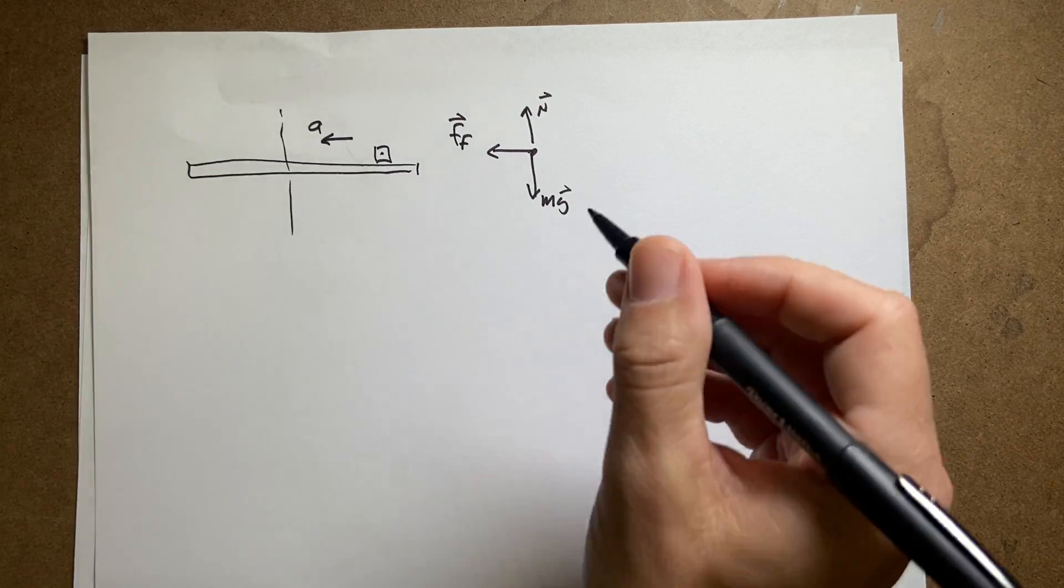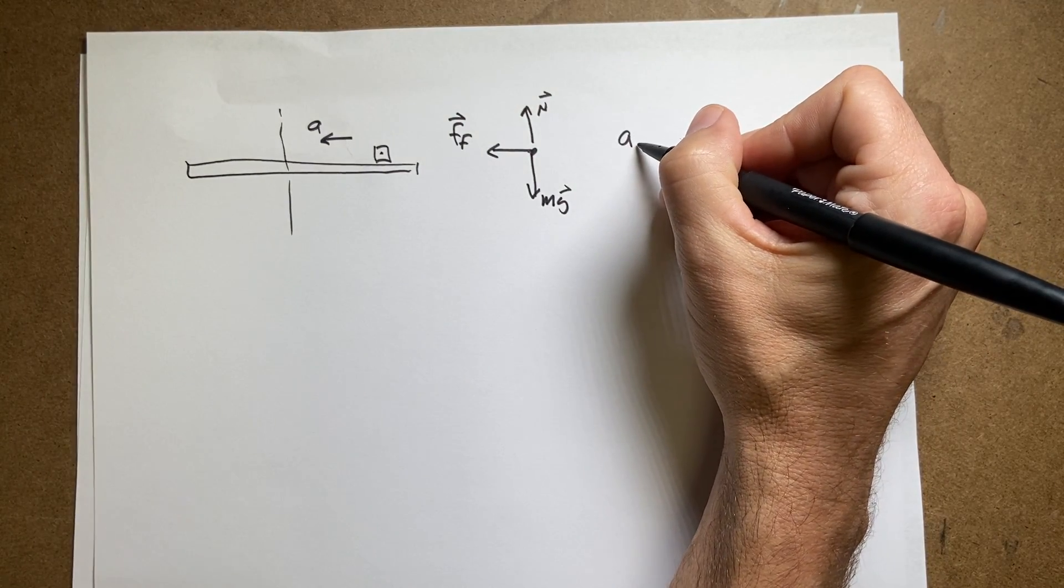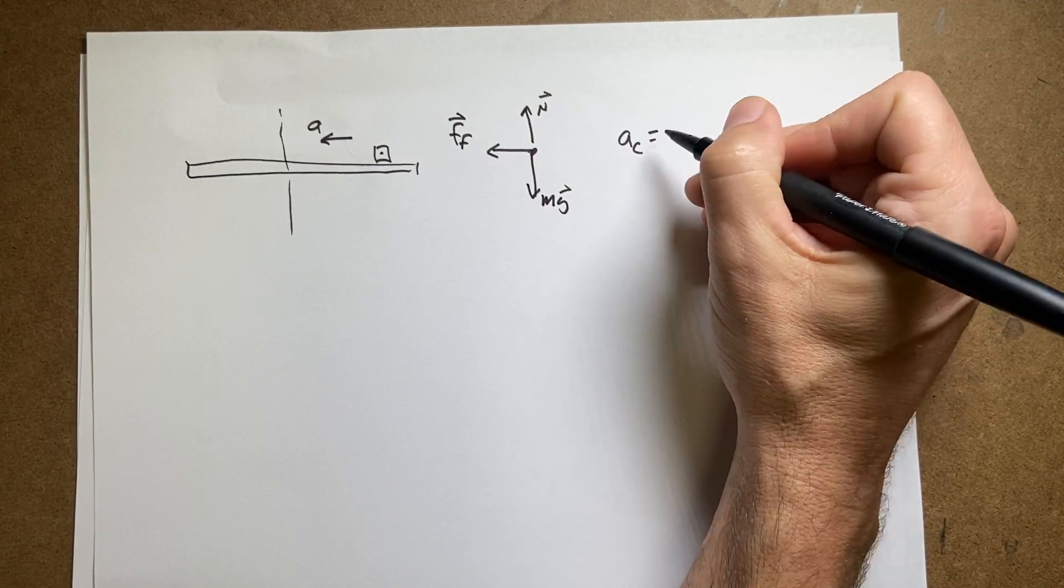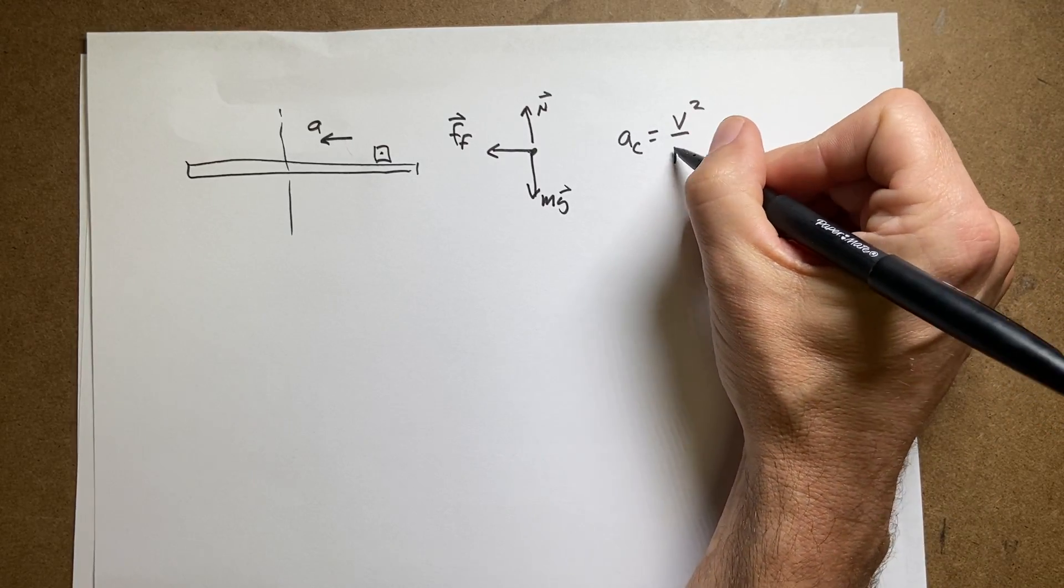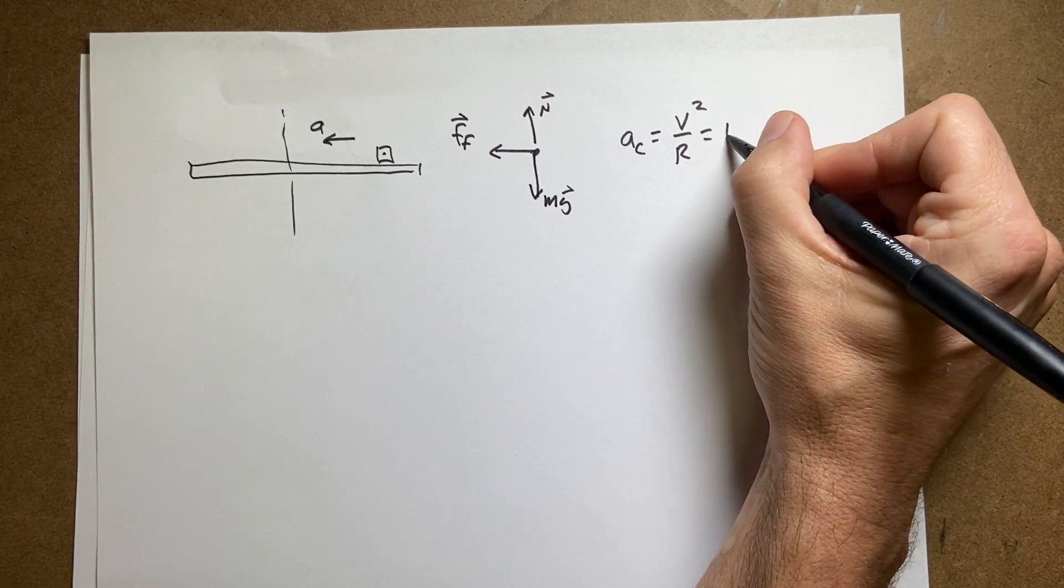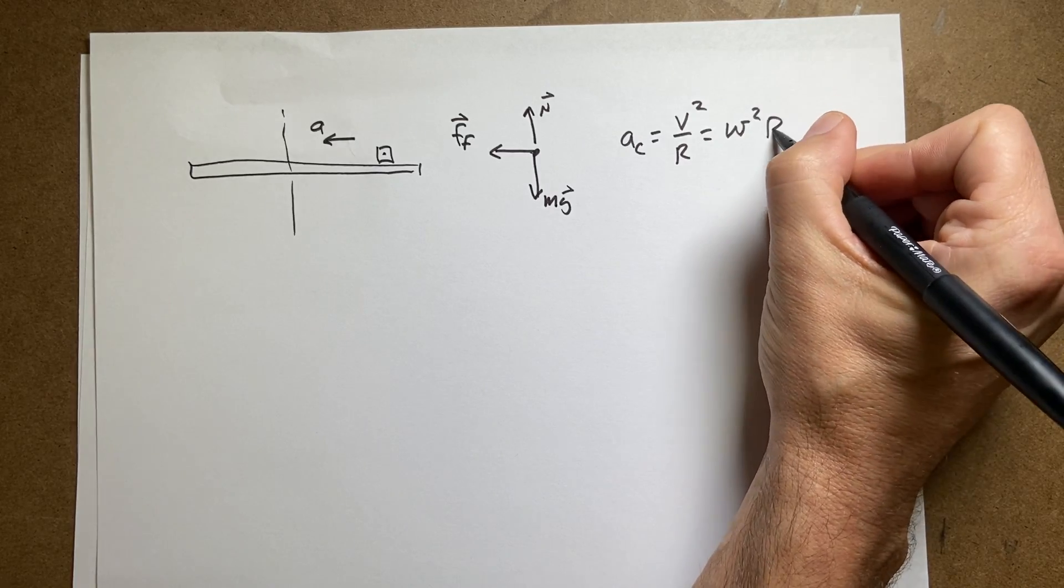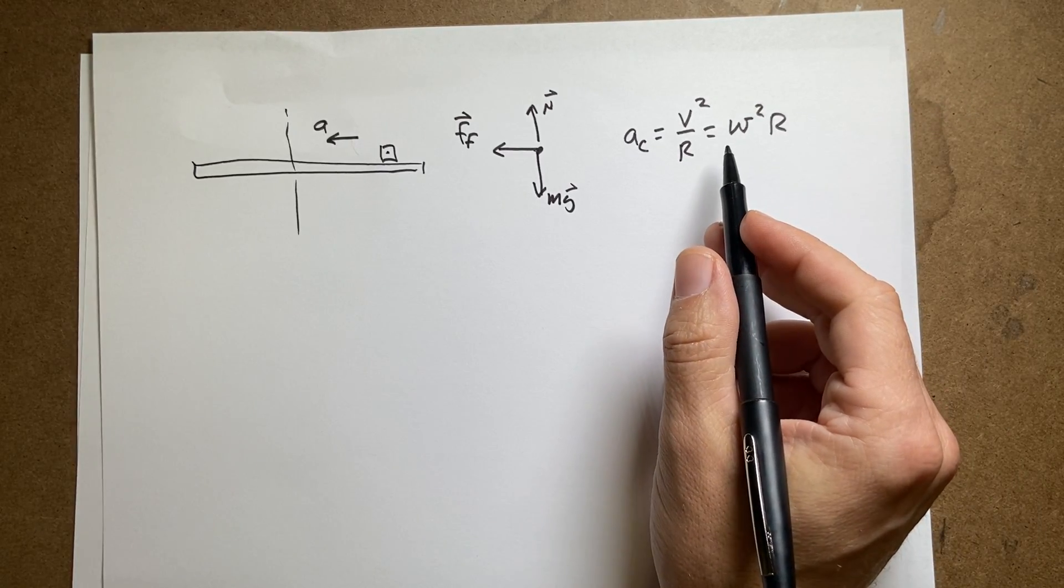So what's the magnitude of this acceleration? The acceleration of an object moving in a circle, we call that the centripetal acceleration, is v squared over r. Or you could write that as omega squared times r, where omega is angular velocity.